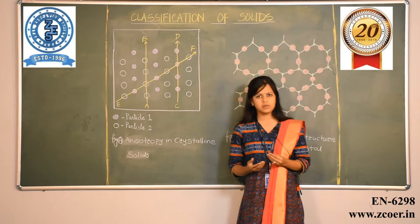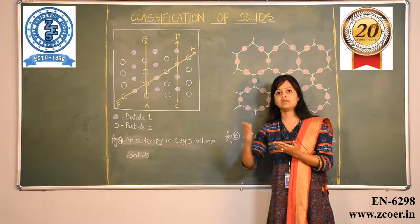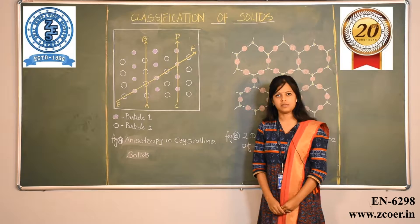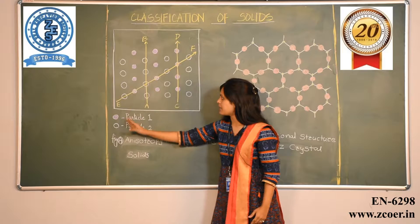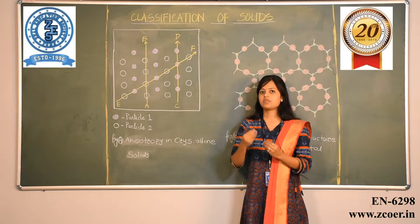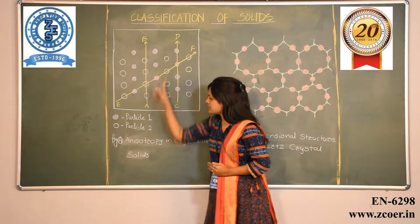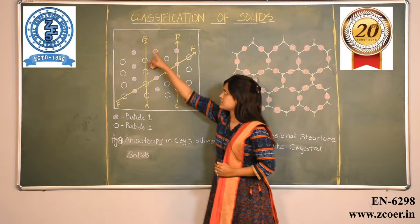Various physical properties of crystalline solids — such as refractive index and electrical conductance — vary with direction. To understand this, consider an example: the constituent particles of the solid are particle 1 (represented by one set of dots) and particle 2 (another set). If I measure the refractive index in direction AB, all constituent particles along that path are of the same type — particle 2 — and that will give one value.